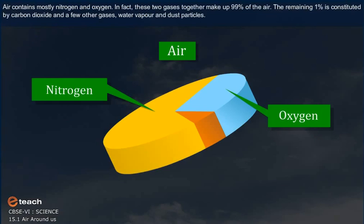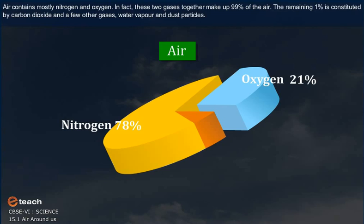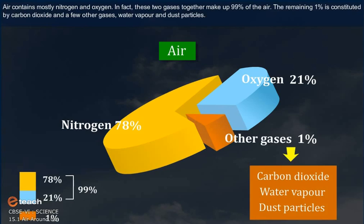Air contains mostly nitrogen and oxygen. In fact, these two gases together make up 99% of air. The remaining 1% is constituted by carbon dioxide and a few other gases, water vapor, and dust particles.